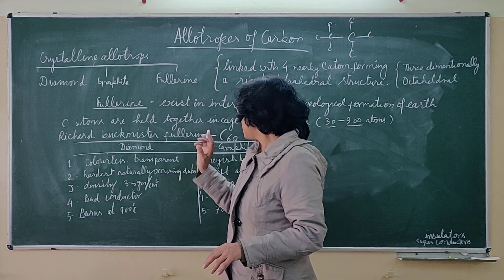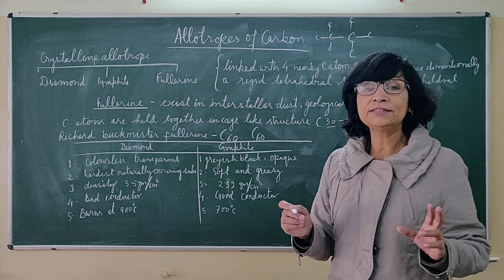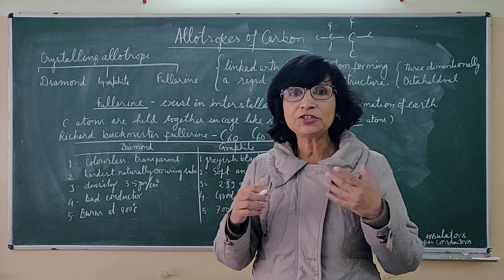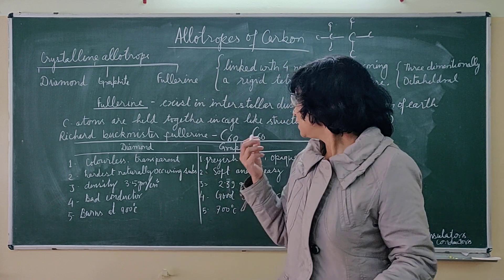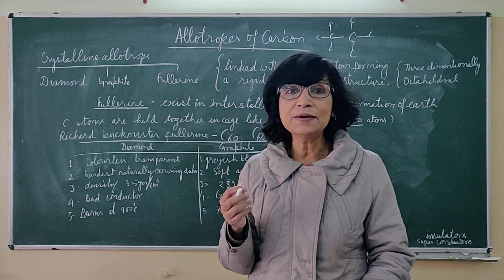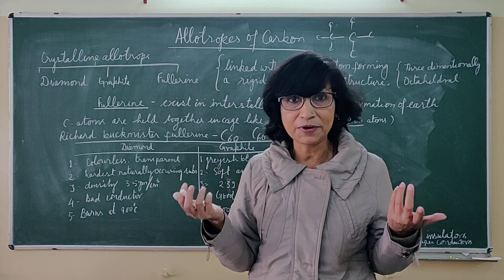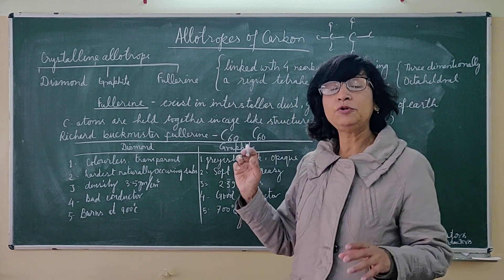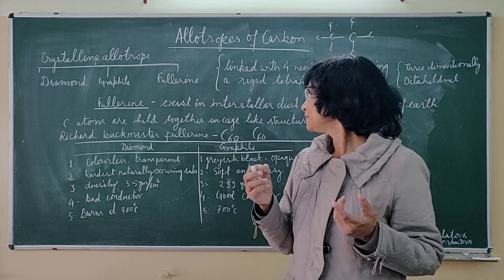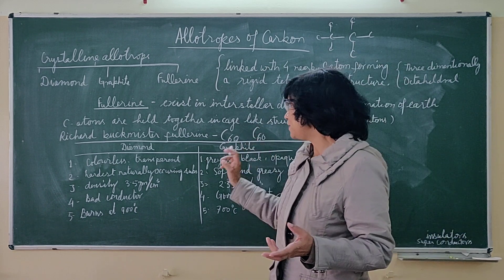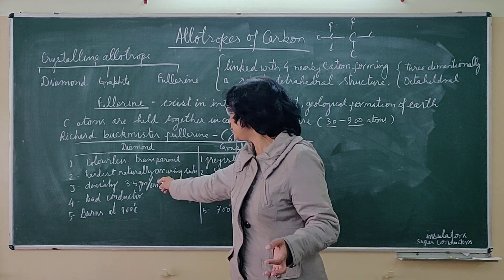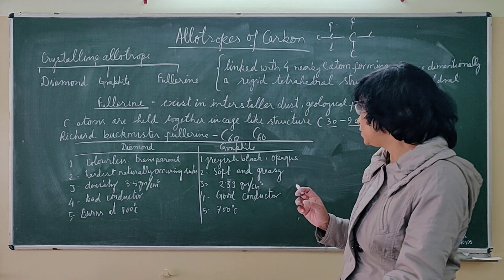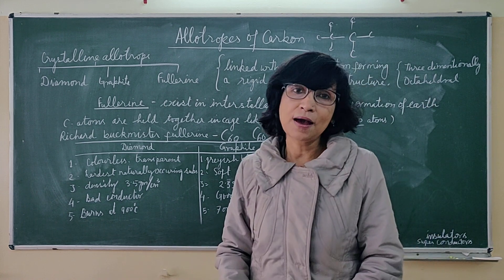Diamond is the hardest naturally occurring substance, whereas graphite is soft and greasy or slippery. Due to this reason, in heavy machine parts we use graphite for lubrication or greasing purposes, because it does not melt at very high temperatures and stays there as a lubricant. Due to being soft, it is also used in pencil leads. Regarding density, the density of diamond is higher than that of graphite: diamond is 3.5 grams per cubic centimeter, whereas graphite is 2.39 grams per cubic centimeter.